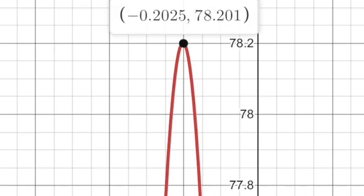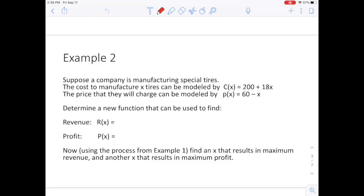That right there is our vertex. The x is negative 0.2025 and the y is 78.201. All right, let's move on to an applied problem. This Example 2, we are going to rely on some of the information that we learned in the catering project. Here we have a cost function for manufacturing x tires: it's going to cost $200 plus $18 per tire.